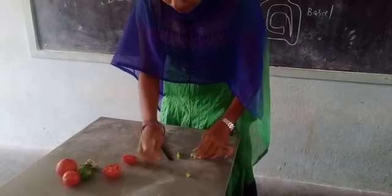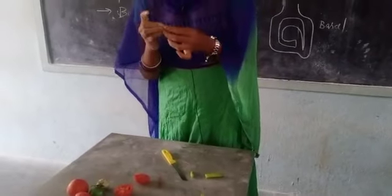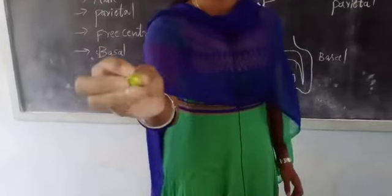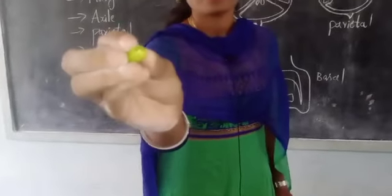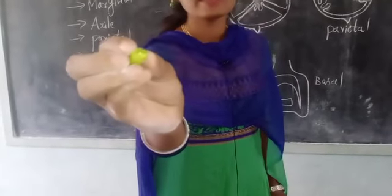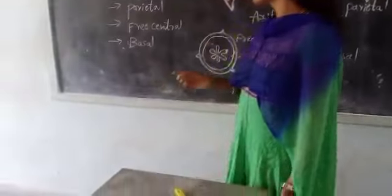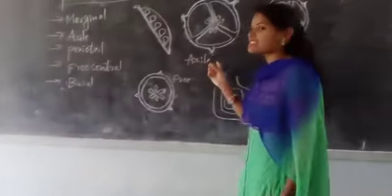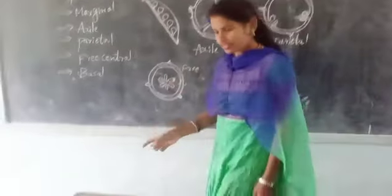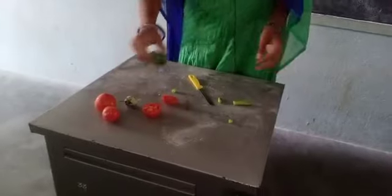Here you can see that even in chili there are some chambers and the seeds are arranged in the center. So chili is also an example for axial placentation. Next, let's see a lemon.